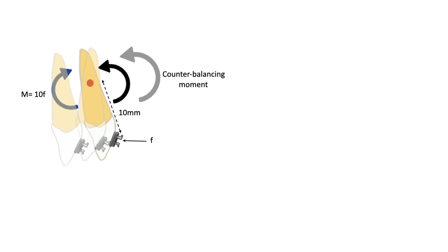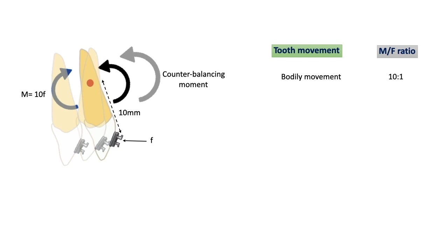It should be noted that the differences in M/F ratios between tooth movements are very small, and even minor alterations in the magnitude of the applied forces or the counter-balancing moment will alter the type of tooth movement. For bodily movement the M/F ratio is 10:1 with equal movement of crown and root. In controlled tipping the ratio varies between 5:1 and 8:1, with the center of rotation displaced away from the center of resistance. In uncontrolled tipping the M/F ratio is 5:1, and the center of rotation and center of resistance are almost the same, so the tooth rotates around the center of resistance. In root movement or torque the M/F ratio is 12:1, wherein the root apex moves further than the crown.